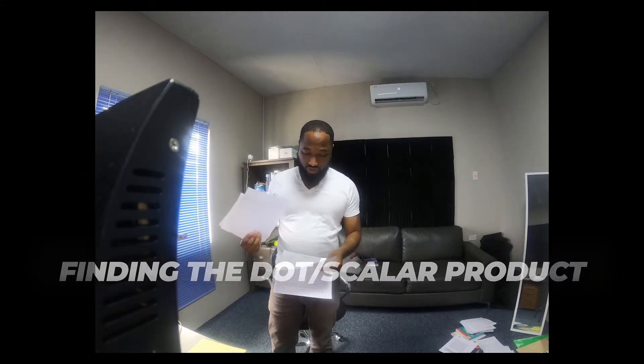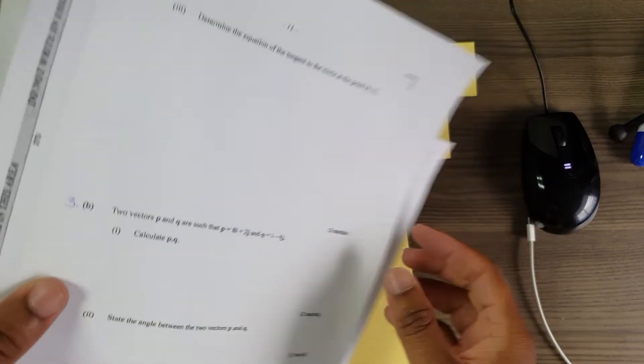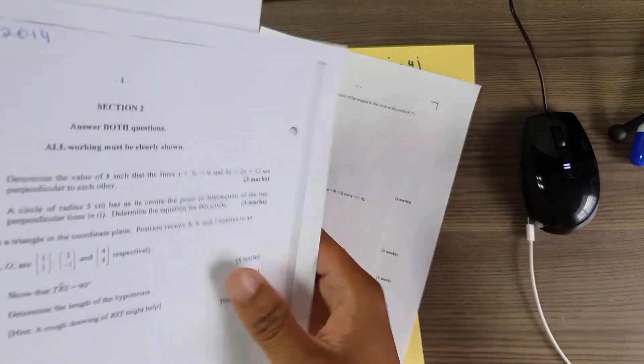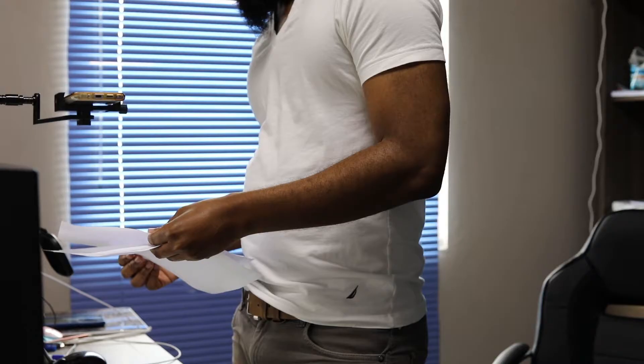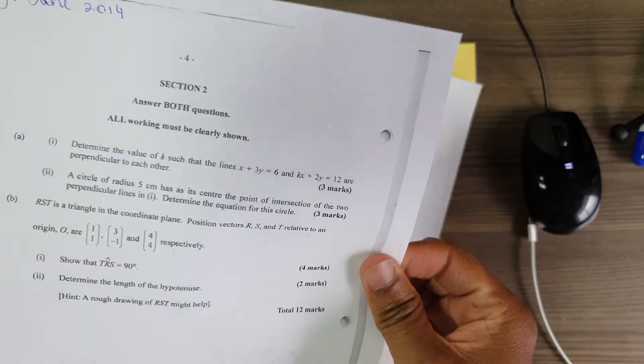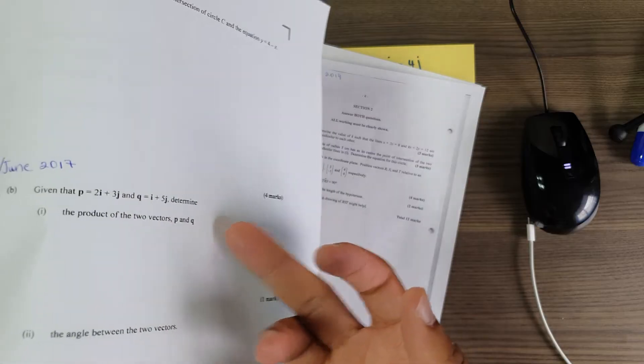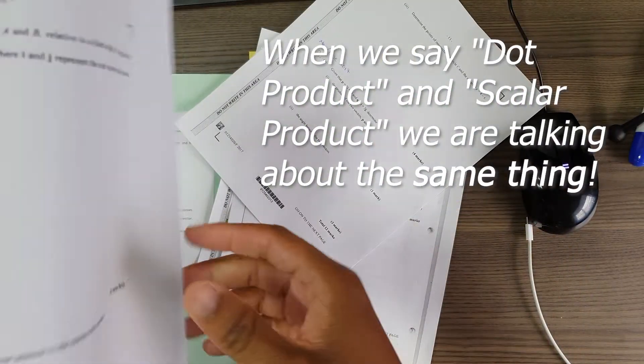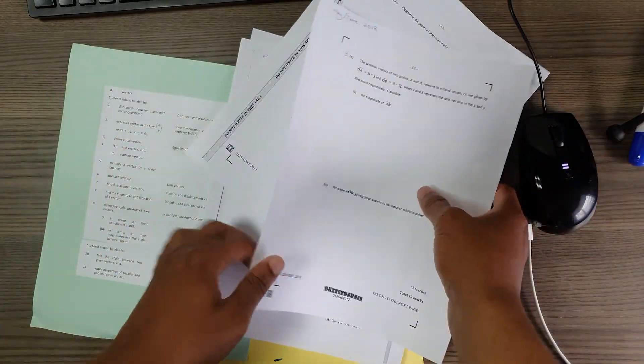All these ADMAX past papers, you know what they have in common? Dot product. This is 2019, 2014 - you're gonna have to find the dot product somewhere in the midst here. You'll find the product again, scalar product - you're gonna have to look for the scalar product here in every single ADMAX paper. You have to look for the dot product.